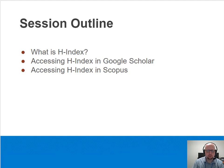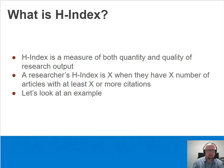Here's a brief outline of what we'll be discussing. First, what is the H-Index? Then we'll look at how to access H-Index in both Google Scholar and Scopus. To begin with, let's look at what H-Index is. H-Index is a measure of both quantity and quality of a researcher's output. The idea is to represent both of those things with one numerical value. So the definition of an H-Index is that a person's H-Index is X when they have X number of articles with at least X or more citations.